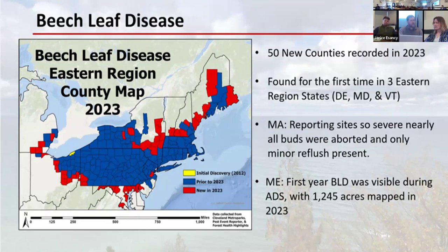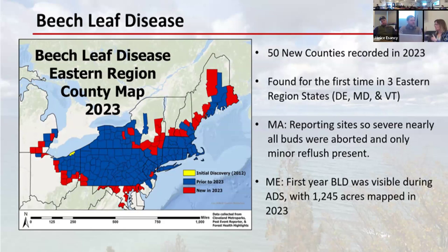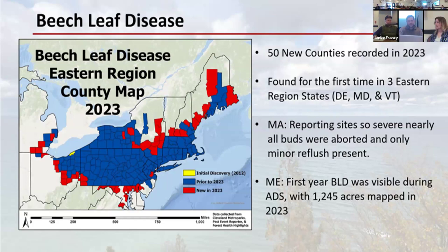There was a question: could beech leaf disease hitch rides on cars or tires? Anything's possible until we figure out the details, though I'd think that would be a little bit less likely. My personal opinion is that this can spread in a lot of different ways — in leaf litter, moving mulch — because eggs and juveniles are so good at dispersing and can persist in many different environmental conditions.